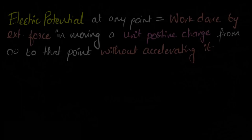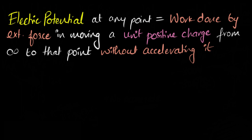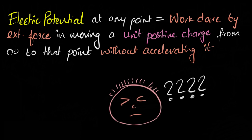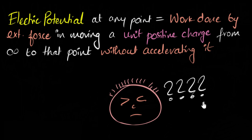Just when I thought I understood positive and negative electric potentials, I looked at the textbook definition and it had such big words like work done by external force, unit positive charge, infinity, to that point without accelerating. And I was like, oh my God, what is this? This looks so different than what I understand. But in this video, we'll figure out exactly how we calculate electric potential using work done. And by the end of the video, this statement will have made a lot more sense to you.